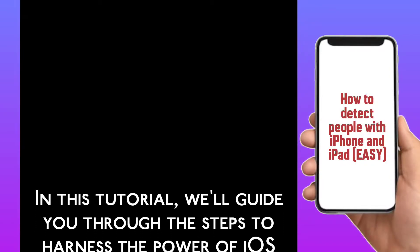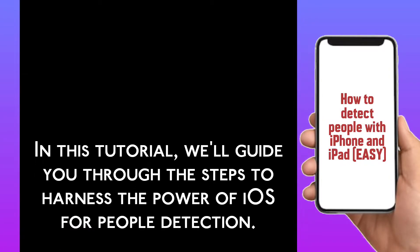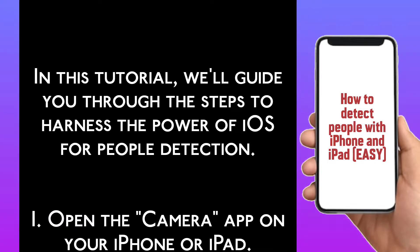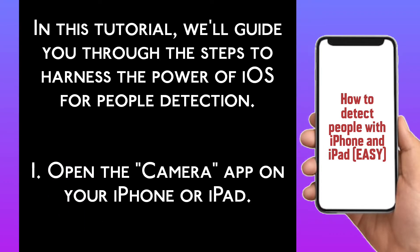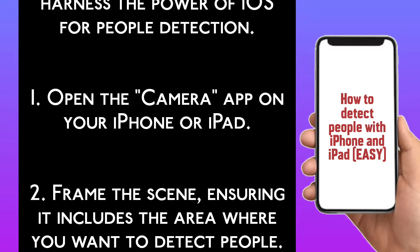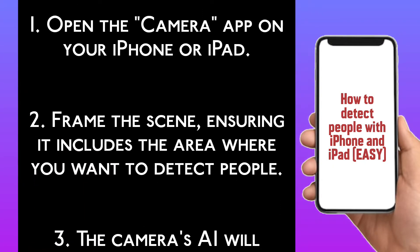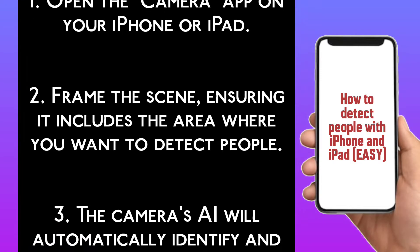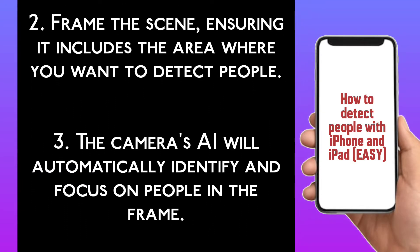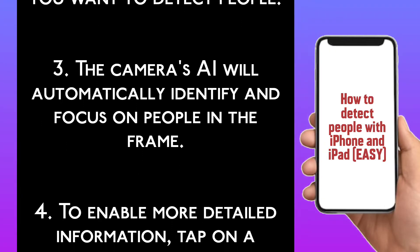In this tutorial, we will guide you through the steps to harness the power of iOS for people detection. Step 1: Open the camera app on your iPhone or iPad. Step 2: Frame the scene, ensuring it includes the area where you want to detect people. Step 3: The camera's AI will automatically identify and focus on people in the frame.